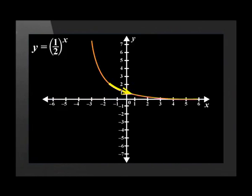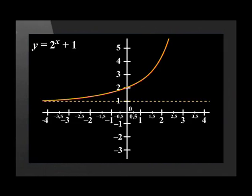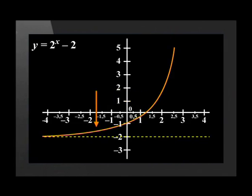If b is changed to less than 1, the graph will be drawn towards the asymptote. If we are drawing from left to right, the q value is the value of the horizontal asymptote and moves the graph up and down.